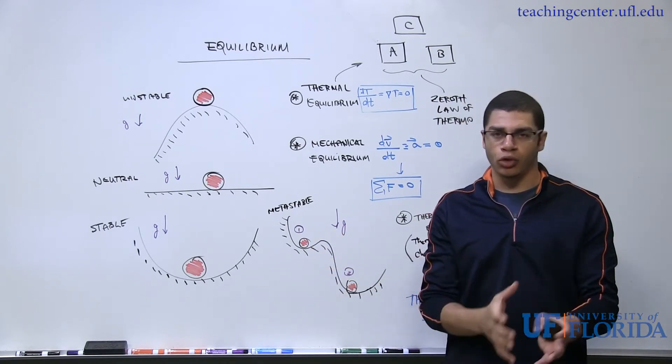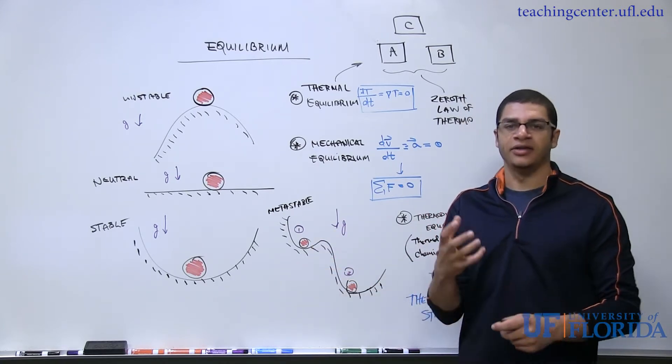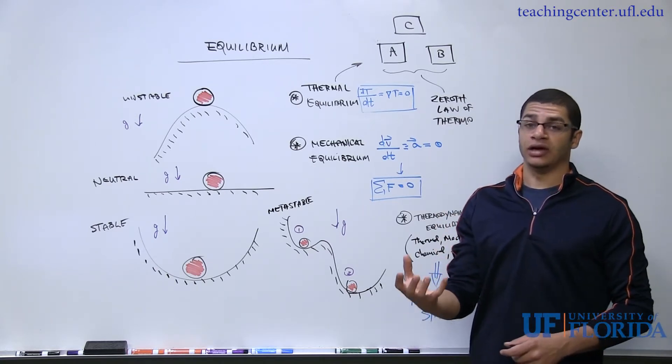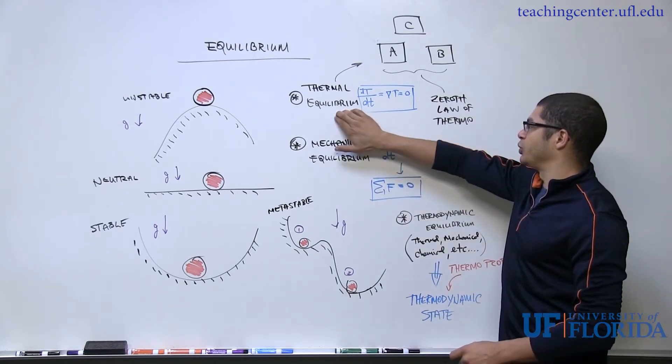So there's no temporal gradients, there's no spatial gradients, the temperature is the same throughout the substance of the system and is not changing with time. So this is our definition of thermal equilibrium.